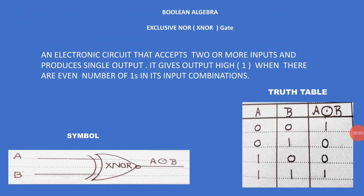Exclusive NOR, also called XNOR gate — an electronic circuit that accepts two or more inputs and produces a single output. It gives output one or high when there are an even number of ones in its input combination. XOR gives output one for odd number of ones; XNOR gives output one for even number of ones. Observe the symbol: two inputs A and B with operator circle-dot. XNOR is the complement of the XOR operation, so in the first row where input is zero-zero, the output is one.